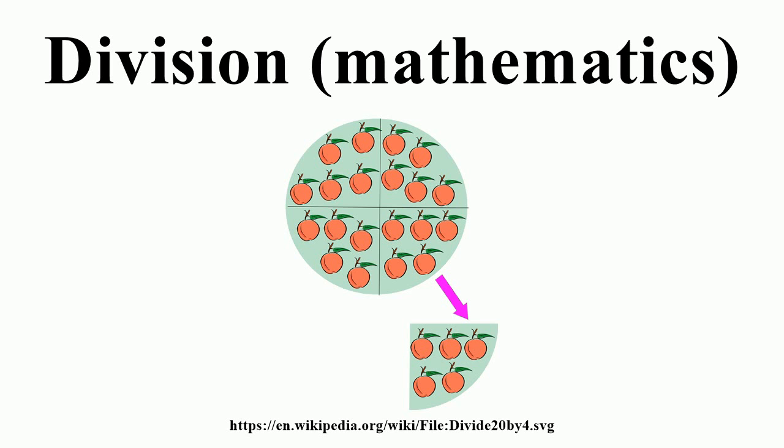To learn about when algebras have a division operation, refer to the page on division algebras. In particular, Bott periodicity can be used to show that any real normed division algebra must be isomorphic to either the real numbers R, the complex numbers C, the quaternions H, or the octonions O.